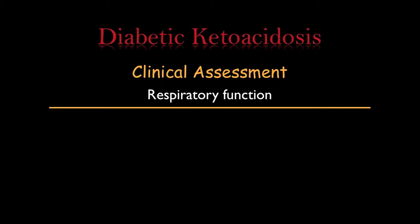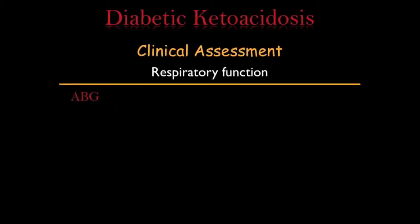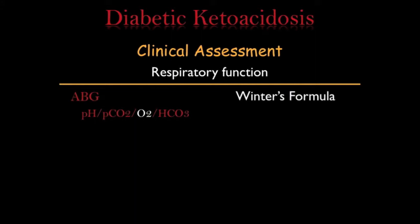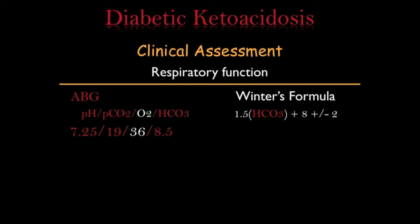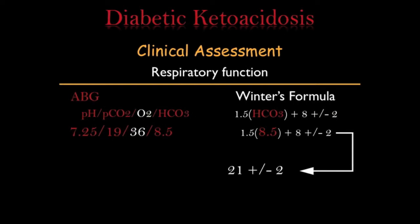Can we predict when a patient is going to go into respiratory failure? Sure we can. We need an ABG, which provides the pH, PCO2, O2, and the measured bicarb level. Then we have to go back to our medical school days and remember the Winter's formula. This formula predicts the expected respiratory compensation for metabolic acidosis. The formula is: expected PaCO2 equals 1.5 times the measured bicarb, plus 8, plus or minus 2. So let's do the math. This patient's ABG was 7.25, a PCO2 of 19, and a bicarb of 8.5. Placing that measured bicarb into Winter's formula gives us a number of 21 plus or minus 2.